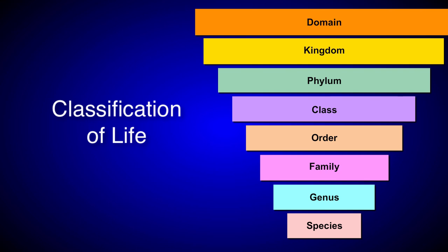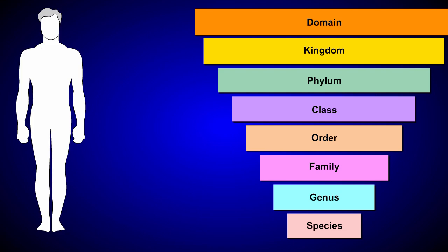When classifying organisms, scientists start at the most inclusive or biggest group and end at the least inclusive or smallest group. Let's use humans as an example. We'll classify humans all the way from the most inclusive group, domain, to the least inclusive group, species.